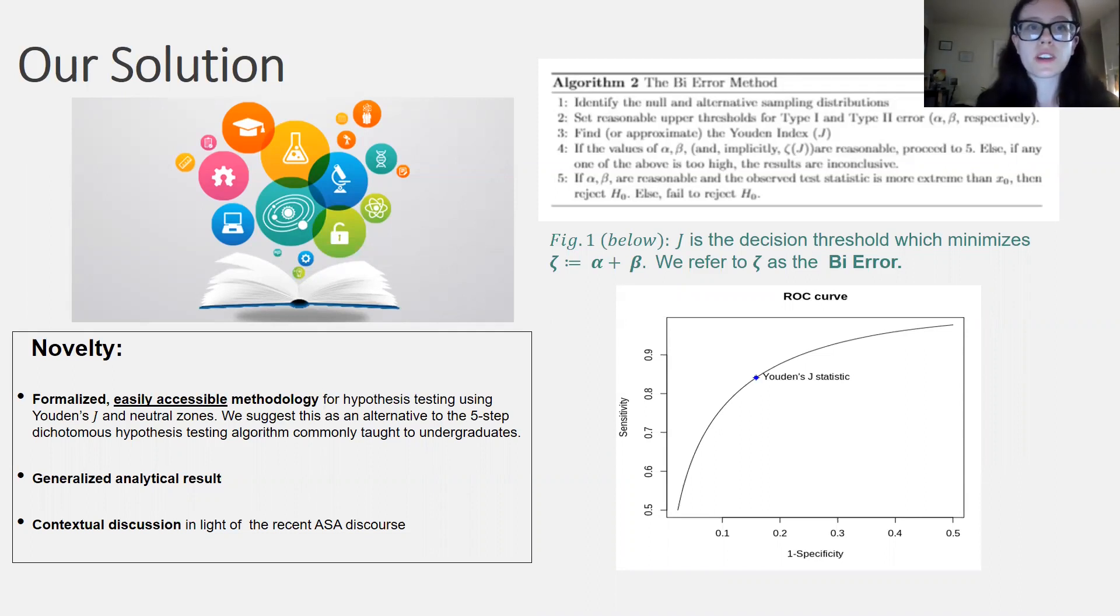Now, there's a point on this graph which is of particular interest to us, the Youden index, which maximizes sensitivity plus specificity. Another way of saying this is that the Youden index, or Youden's J statistic, minimizes the additive type 1 and type 2 error, which I refer to as the BY error. For our purposes, it's convenient to think of the Youden index as the minimizer of the BY error as a function of the decision threshold, aka the critical value.